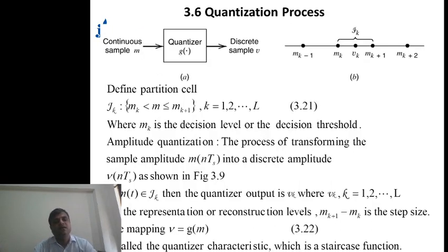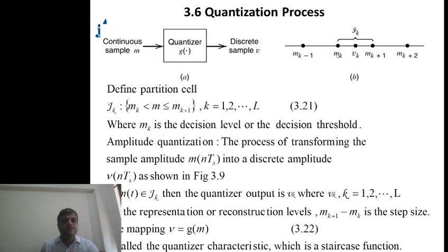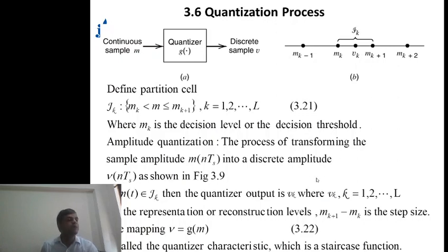In the quantization process, a continuous sample is passed to the quantizer and the output is a discrete sample. The quantizer has different values it can represent: mk, mk+1, mk−1 — these are called decision levels or decision thresholds. Amplitude quantization is basically the process of mapping a sample amplitude m into a discrete amplitude. For example, a sample amplitude of 5.2 becomes 5, and a sample amplitude of 4.8 also becomes 5.